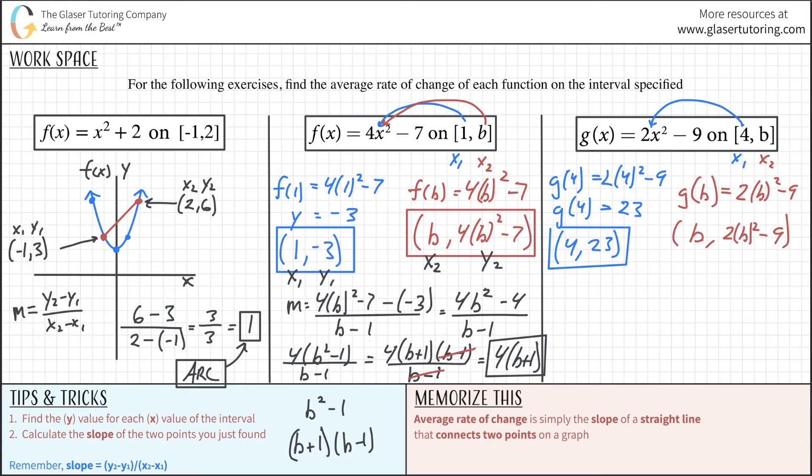So now all we got to do is take this and plug it in. This is my x2 value, we said. So therefore, this is my y2 value. This is my x1 value. This is my y1 value. So now plugging into the slope formula, we take the y2. This is going to be 2b squared. I'm going to just drop the parentheses for now. So 2b squared minus 9. Minus then my y1, which is 23.